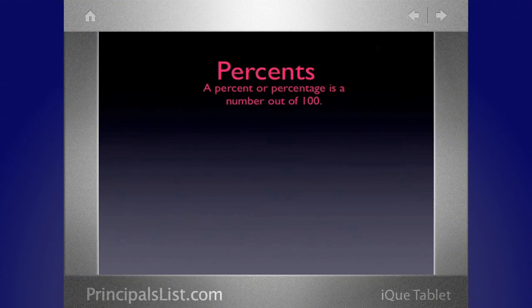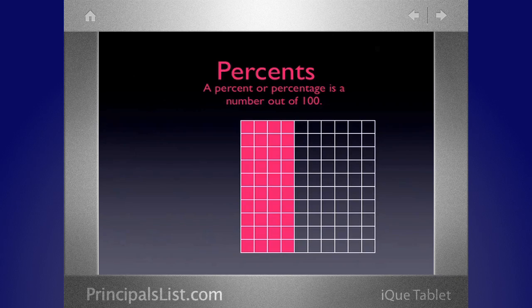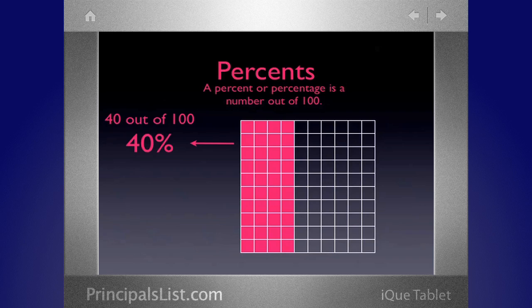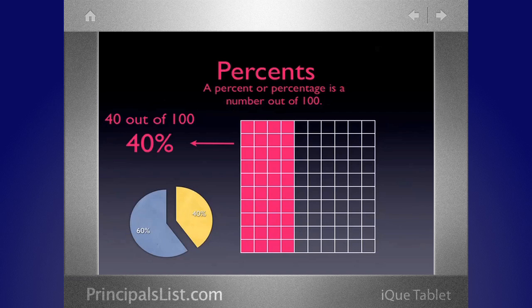Alright. A percent is out of a hundred. So if we take this hundred block, we have four-tenths filled in or 40 hundredths. That would be the equivalent of 40 percent. 40 out of a hundred. And if you see the pie chart, it's just less than half, just like our model shows. Out of a hundred.